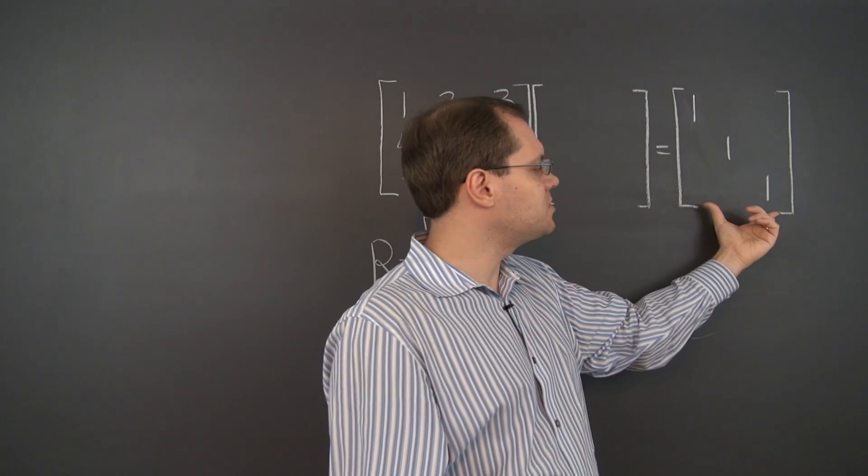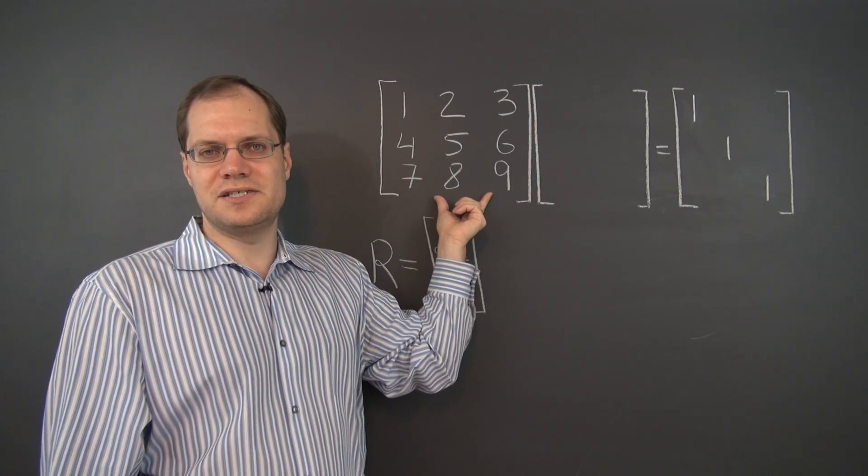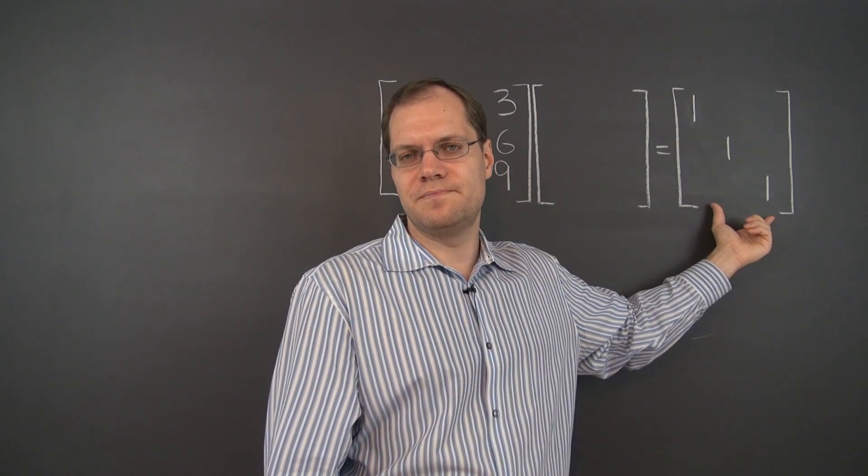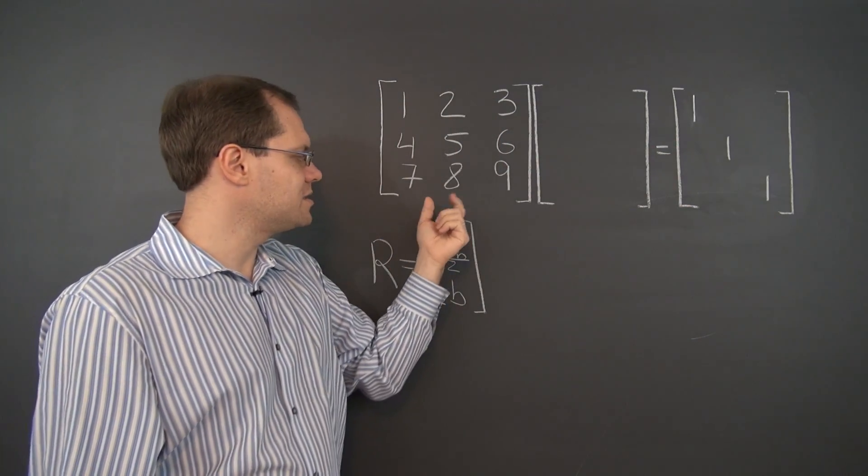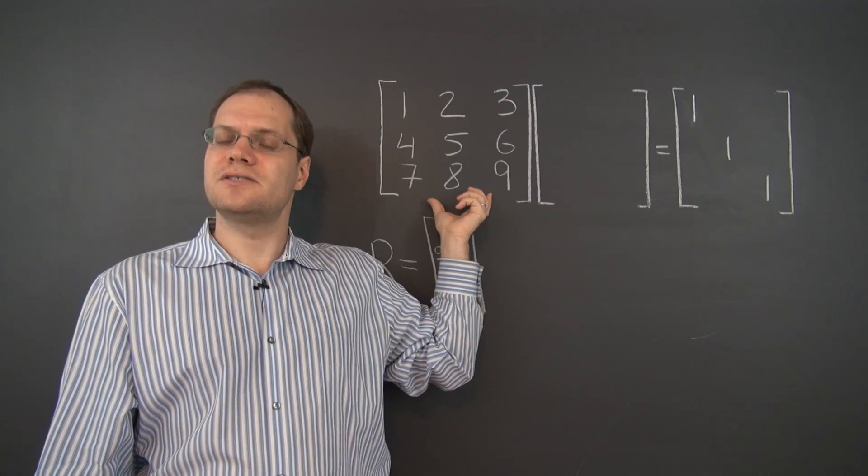So, the column space of this matrix belongs to the column space of this matrix. But the column space of this matrix is three-dimensional, and a three-dimensional column space, or linear space, cannot be a subspace of a two-dimensional subspace.